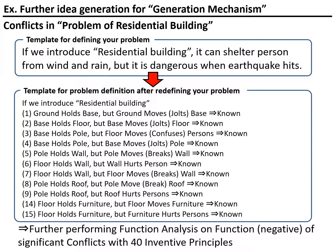Let me confirm the current situation of the problem definition for the residential building problem. Firstly, we defined the problem as: if we introduce a residential building, it can shelter a person from wind and rain, but it is dangerous when an earthquake hits. Through the redefinition of the problem, this problem is now transformed into a combination of smaller conflicts.